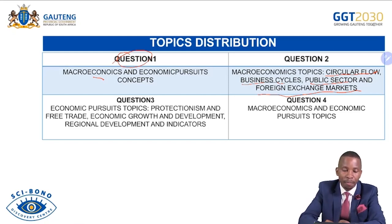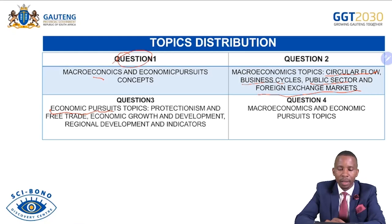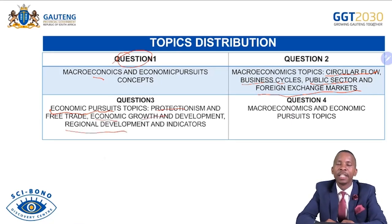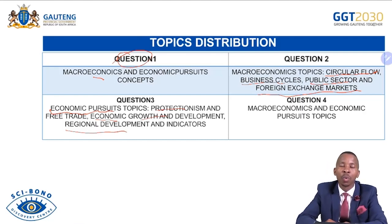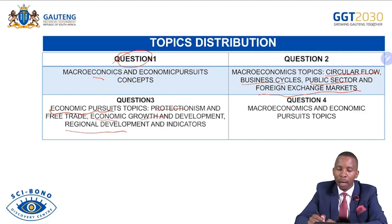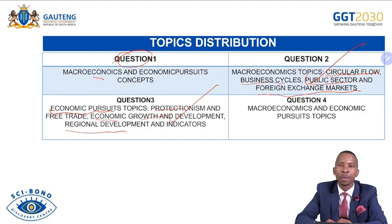Question 3 covers economic pursuits topics: production and free trade, economic growth and development, regional development, and indicators including economic and social indicators. These are the topics to master for Question 3. Question 4 combines both macroeconomics and economic pursuits — you need to know both sets of topics because it's a combination.